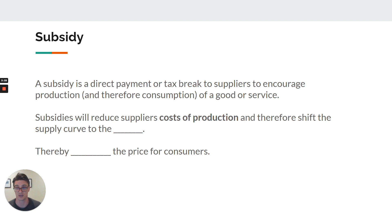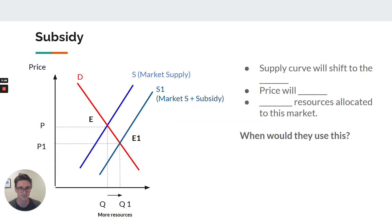Subsidies work to reduce the costs of production. As a supply factor, all other things being equal, producers are able to supply more at each and every price. This shifts the supply curve to the right, decreases the price for consumers, and means more resources are allocated to this particular market. The result is the same as direct provision — S and D are our market without intervention, and the market supply plus the subsidy results in a rightward shift — more production and more resources allocated.